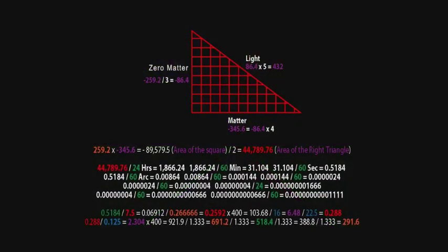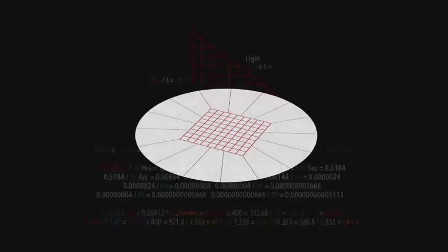This 3-4-5 triangle displays the ratios of zero matter to light and light to matter. From the area of the triangle defined by this right triangle with the ratios of 3 to 4 to 5, we are able to calculate the resonant frequency of the element.